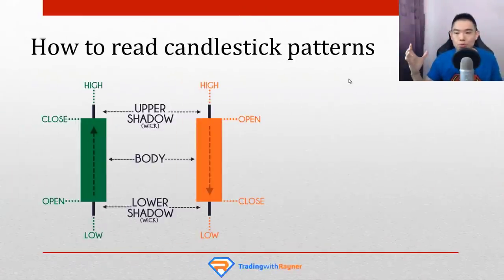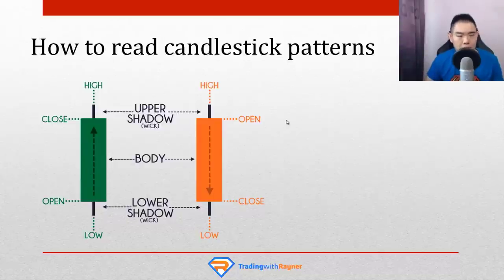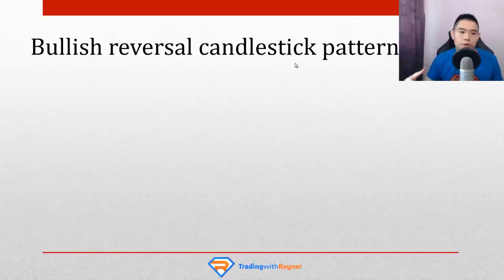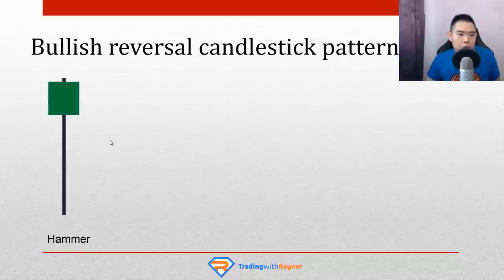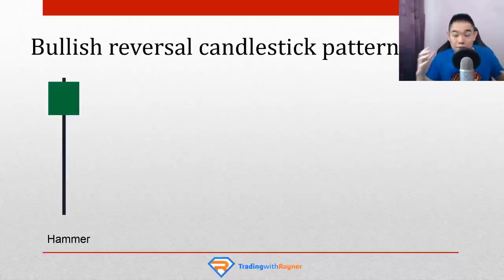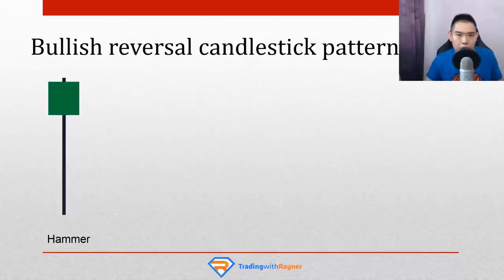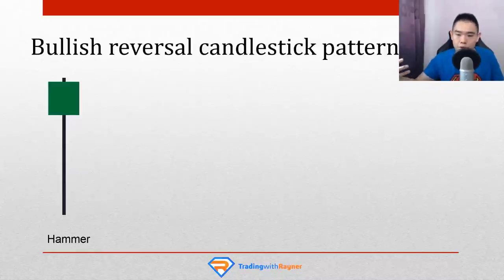Now you know the basics of reading a candlestick chart. How do you use it to time your entry? You want to focus on a few key patterns. There are two bullish and two bearish patterns I want to share. There are many candlestick pattern names out there — hammer, harami, engulfing, dark cloud cover — but as you grow as a trader, you realize most are variations of one another. I'll share the most common and useful ones, and from there you can explore further.